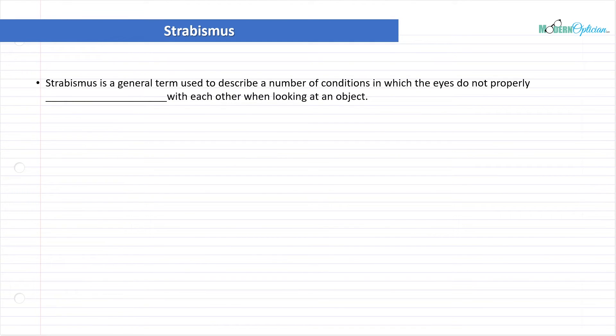Strabismus is a general term. It's not specific. Strabismus covers lots of stuff. It's used to describe a number of conditions in which the eyes do not properly align with each other when looking at an object. Very simple. Strabismus is when the two eyes aren't pointing the right direction. Usually it's one. One will stay straight in line and one won't. If the eyes aren't aligned, we can call it the general term of strabismus.